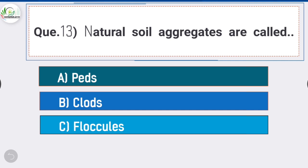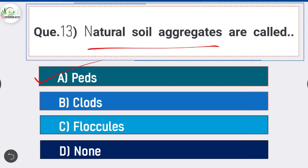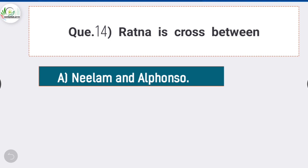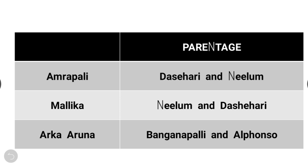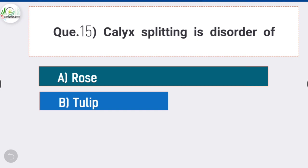Question number thirteen: natural soil aggregates are called - answer is option A - peds. Natural soil aggregates are called peds. Question number fourteen: Dashehari is a cross between - answer is option A - Neelam and Alphonso. Amrapali is the cross between Dashahri and Neelam; Mallika is the cross between Neelam and Dashahri; and Arkarun is the cross between Banganapalli and Alphonso.